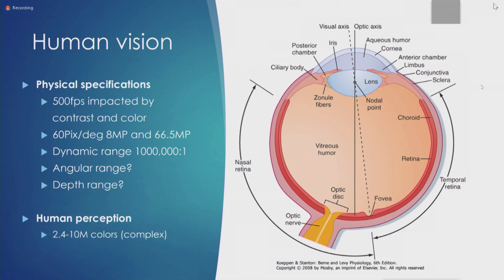I'm going to talk a bit more about angular range and depth range, because these numbers are less tackled compared to others in the older human visual perception literature. On color: it's very debatable — there are different standards — but it's estimated that we can distinguish somewhere around 2.4 to 10 million colors. Color perception is a really complex neurological phenomenon and it's difficult to break it down into simple numbers, but take it with a grain of salt: roughly 10 million colors.